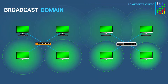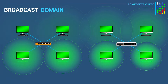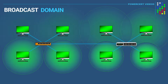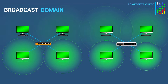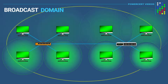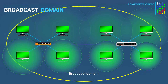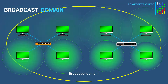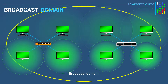In this example we have a local area network with four computers connected to a hub and four computers connected to a switch, and the hub and switch are connected to each other. So this network is one large broadcast domain — every computer on this network can receive broadcasts from every other computer, because hubs and switches will always forward broadcasts.